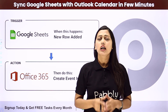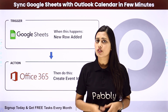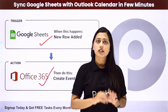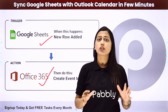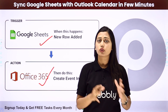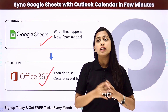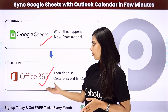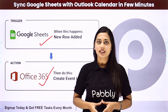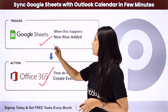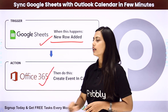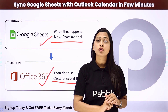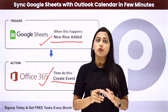We will learn how to integrate Google Sheets and Office 365 so that events collected in your Google Sheet are added automatically to your Outlook Calendar. In this automation, the trigger will be a new row added in Google Sheet, and the action will be to create an event in the Outlook Calendar in Office 365.